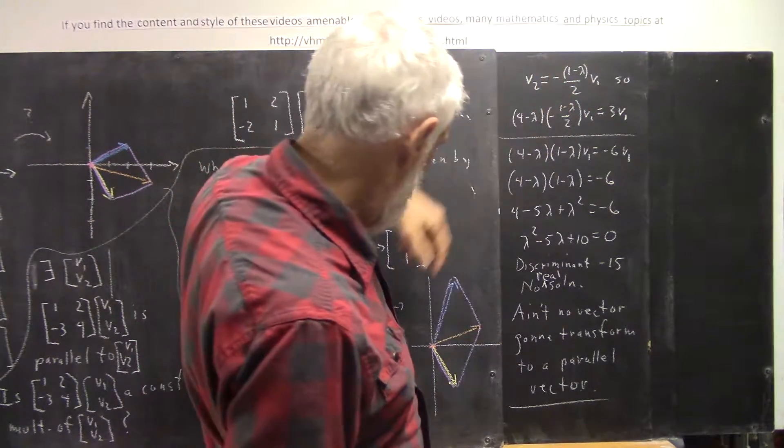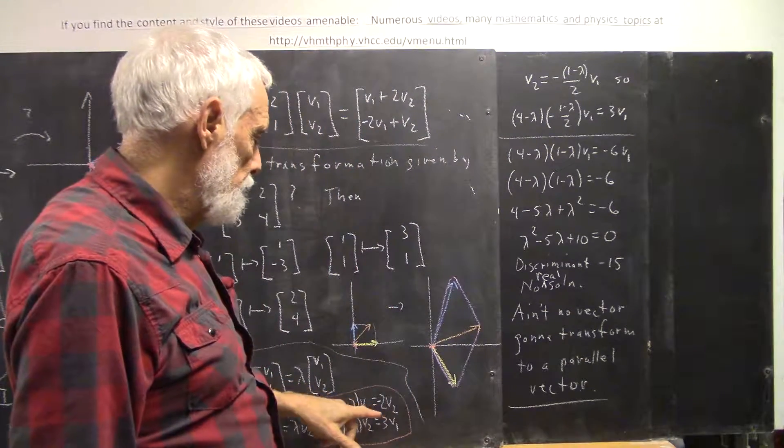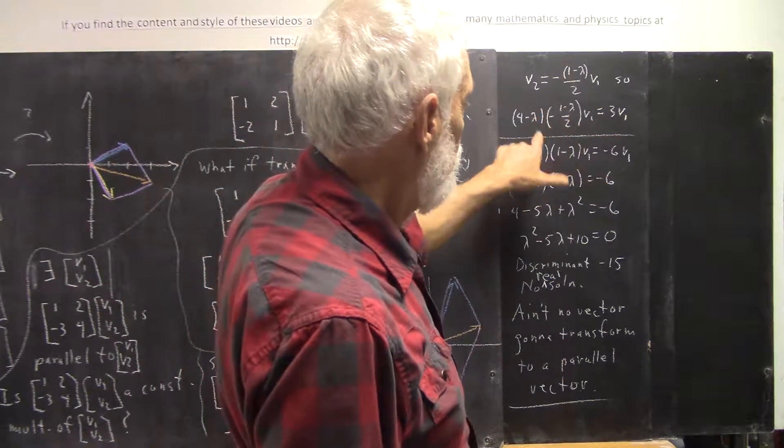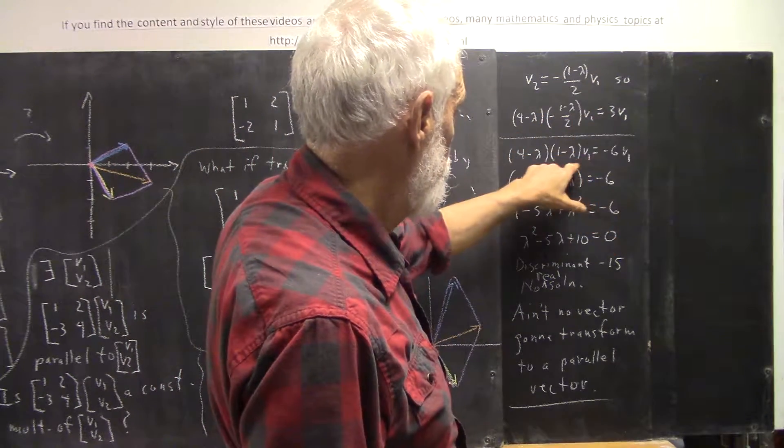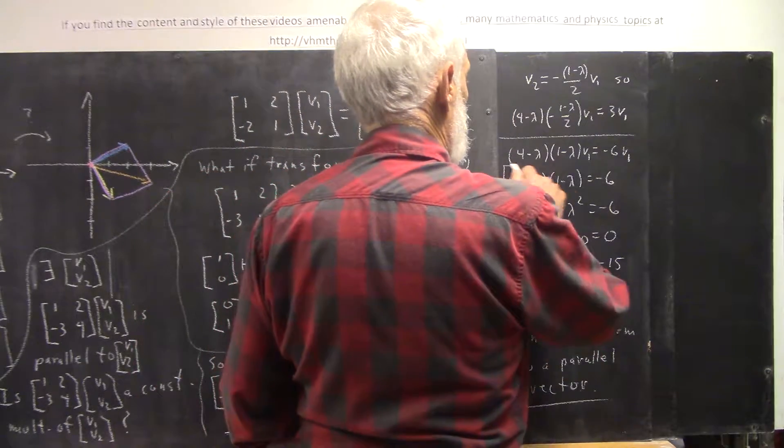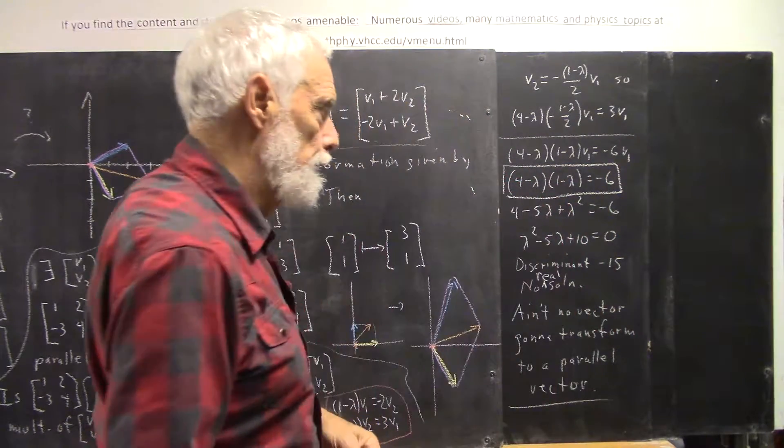So again, taking these two equations, we solve this one for v2, plug in here, rewrite what we have, multiply by negative 2, and then divide by v1, and we get this. Now, this actually has a name. It's called the characteristic equation, but you get that from reading.